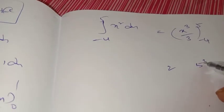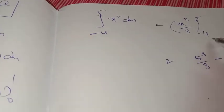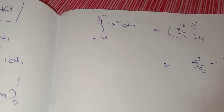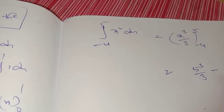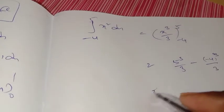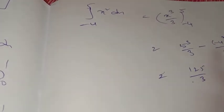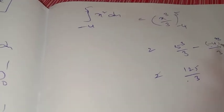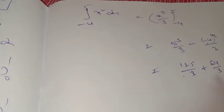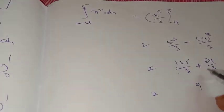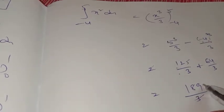Substituting the upper limit 5: 5 cubed by 3 minus substituting the lower limit 4: 4 cubed by 3. Here 5 cubed equals 125 by 3. 4 cubed equals 4×4×4: 4×4 is 16, 16×4 is 64. Minus becomes plus, so 64 by 3. That equals 125 plus 64 by 3 equal to 189 by 3, which simplifies to 63. So 63 is the answer.